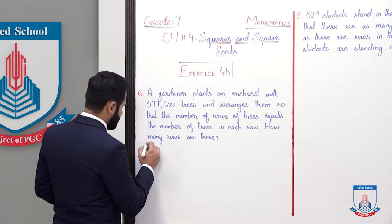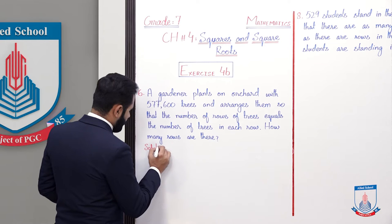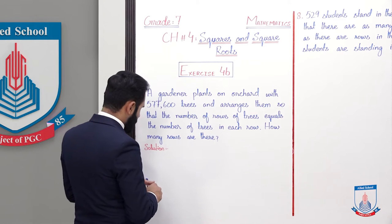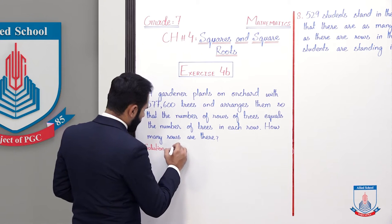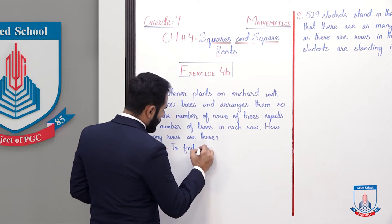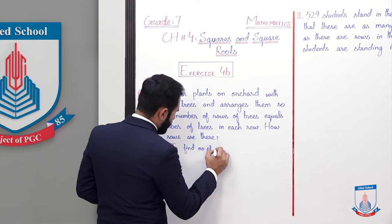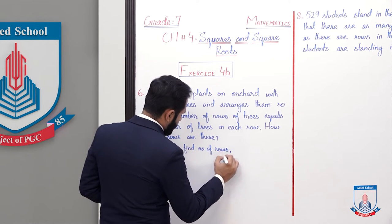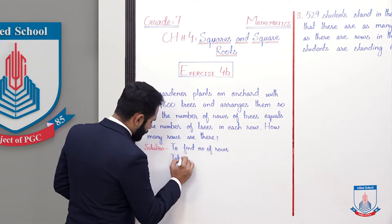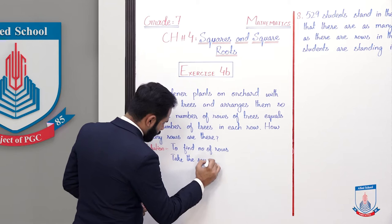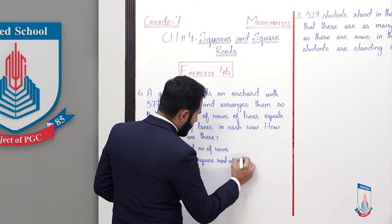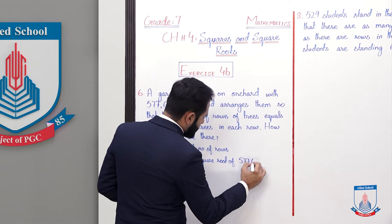Let us solve it. Write the solution. To find the solution, the number of rows — take the square root of 57,600.